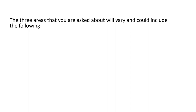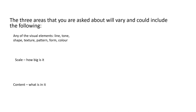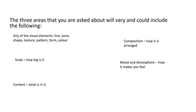The examiners will always ask about three areas but the areas they ask about will vary and could include any of the visual elements: line, tone, shape, texture, pattern, form or colour. Also scale — how big the work is; content — what is in it or what it's about; composition — how it's arranged and how the artist has led your eye around the piece; and mood and atmosphere — how it makes you feel.